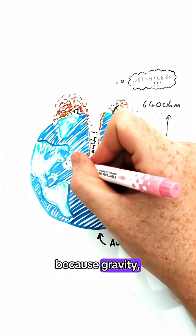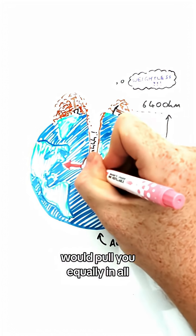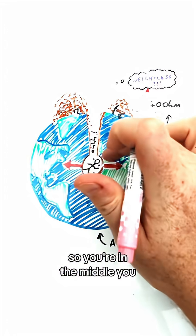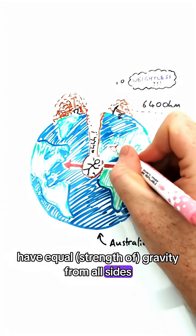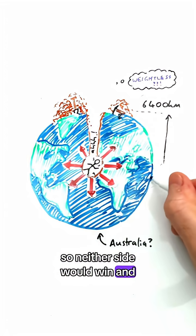The reason is because gravity, which is produced by mass, would pull you equally in all directions. So you're in the middle, you have equal gravity from all sides, so neither side would win and pull you in that direction.